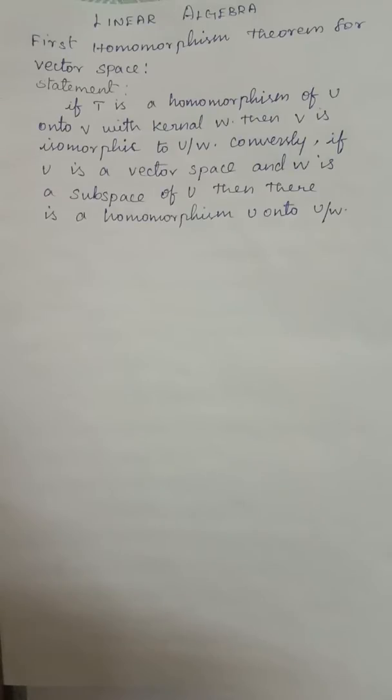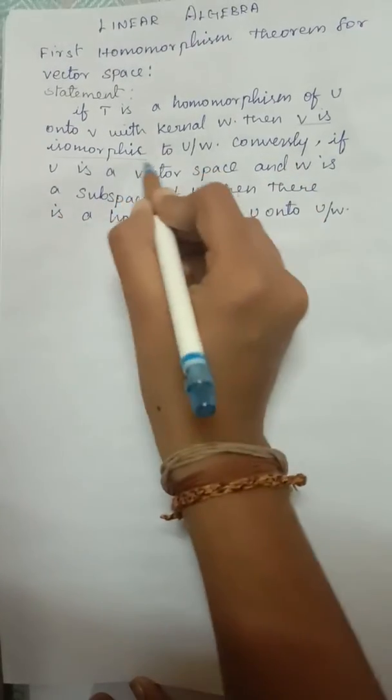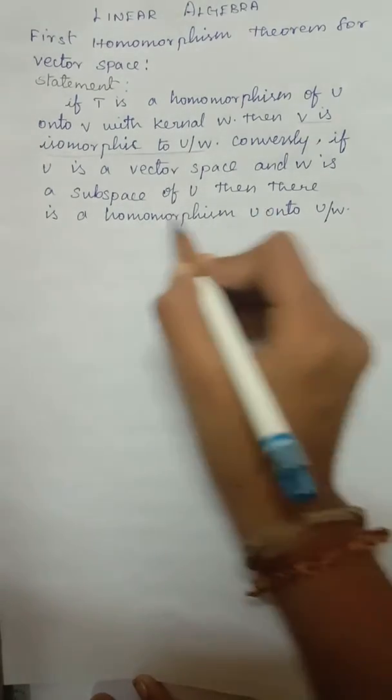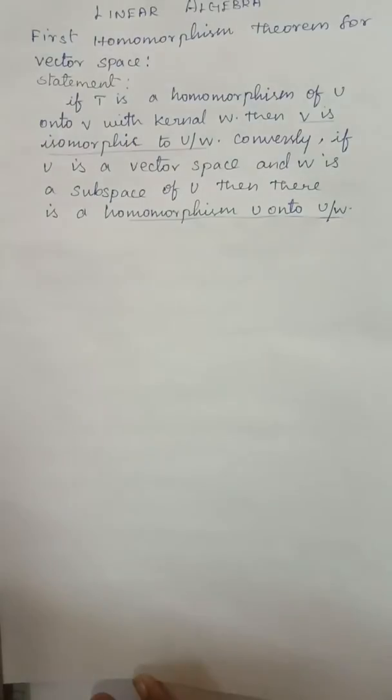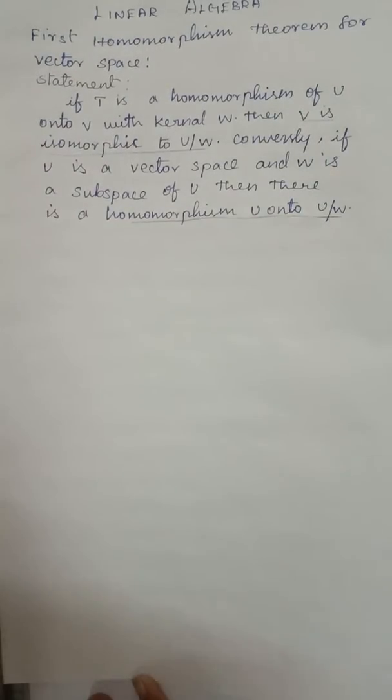Next part — conversely, if U is a vector space and W is a subspace of U, then there is a homomorphism from U onto U/W. This is what we will prove. There are two parts to prove: first, V is isomorphic to U/W; and next, a homomorphism between U and U/W.